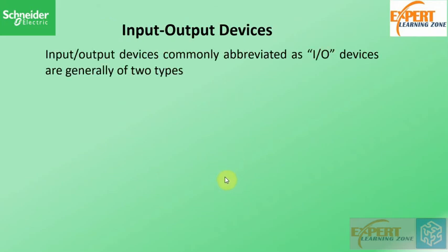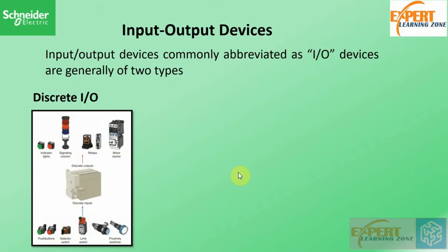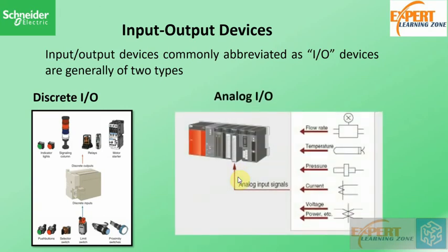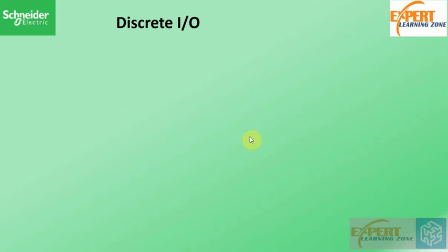Input output devices, commonly abbreviated as I/O devices, are generally of two types: the digital or discrete input output, and analog input output. We are going to start with the discrete input output.